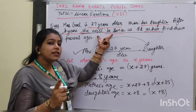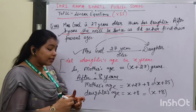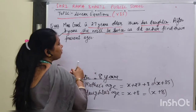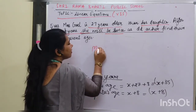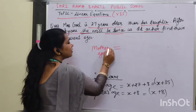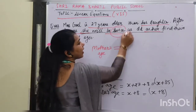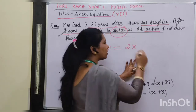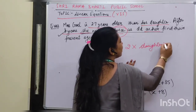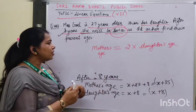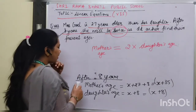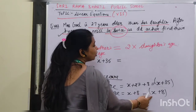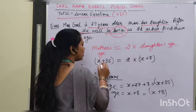Now we will frame the equation. The question says the mother will be twice as old as her daughter. So mother's age equals 2 times daughter's age — using their ages after 8 years. We write: x plus 35 equals 2 times (x plus 8). We keep the daughter's age in brackets.